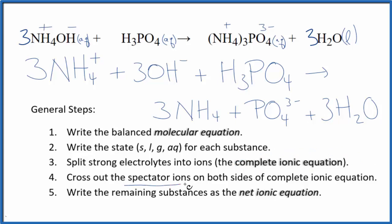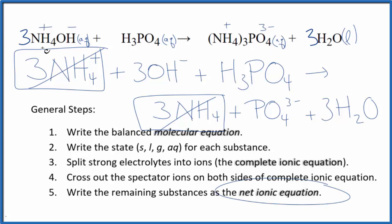Now we'll cross out spectator ions. They're on both sides of the complete ionic equation. So if I look at the reactants here and the products, I see I have three ammonium ions in the reactants and in the products. Let me get rid of that. Everything else, though, is unique. So this is the net ionic equation for NH4OH plus H3PO4.